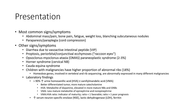Laboratory findings: more than 90% show increased urine homovanillic acid and vanillylmandelic acid. Better differentiated tumors produce more mature catecholamines. Homovanillic acid is a metabolite of dopamine, elevated in more mature neuroblastoma and ganglioneuroblastoma.